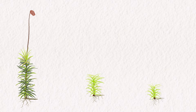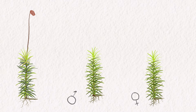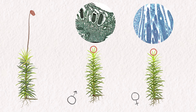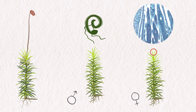If the conditions are right, they'll grow into mature gametophytes. A female gametophyte has an archegonia, which houses eggs, and a male gametophyte has an antheridia, which houses sperm. These sperm are flagellated, meaning they need at least a thin film of water to swim to an egg.